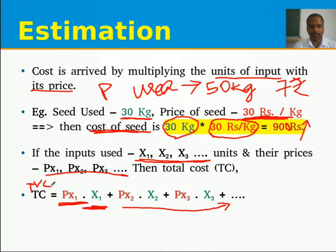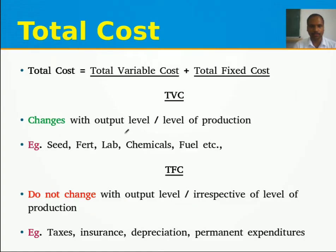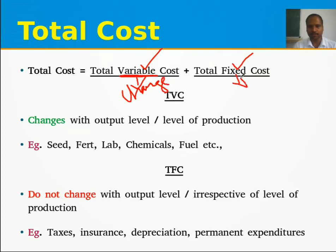There are two major cost concepts: variable cost and fixed cost. Variable means it is varying in nature — it changes. Fixed means it will not change.